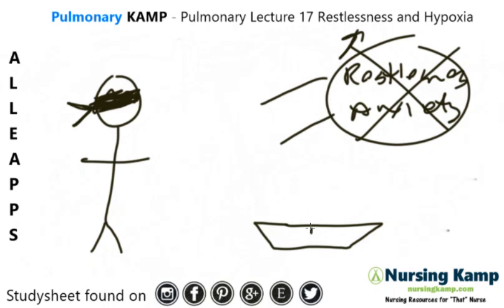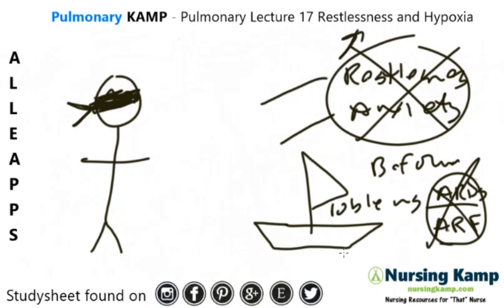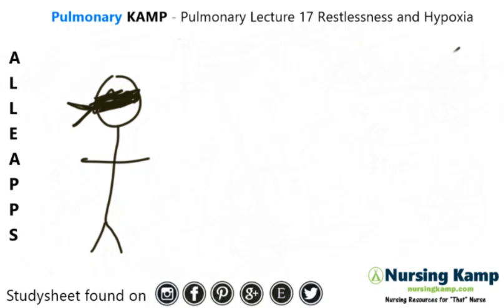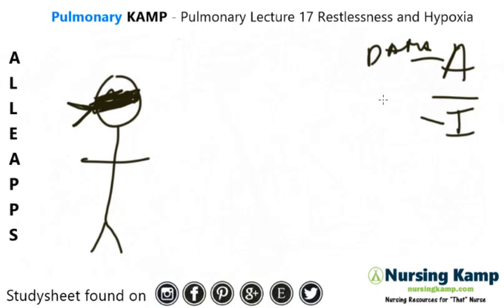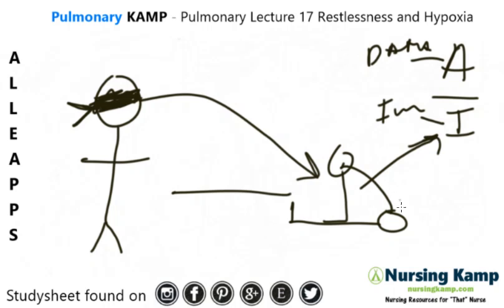That restlessness and anxiety is the warning — the boat coming — and those are problems before acute respiratory distress becomes acute respiratory failure. The principle is: in the nursing process, you always assess before you implement. You always look for the data before you intervene. So you're not going to walk into a room blind and immediately put a patient in high Fowler's, because you have no data to justify that implementation.